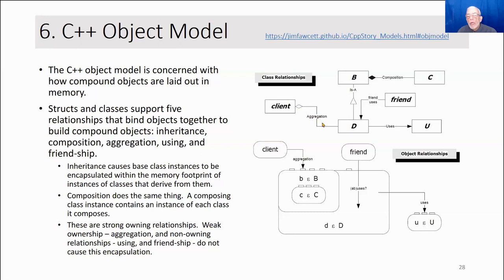Aggregation is a weaker ownership relationship. D is not an indelible part of client. When client starts, there is no D object yet. The client may or may not decide to create an instance of D. Typically, it might do that by creating an instance of D on the heap and holding on to a pointer to D.